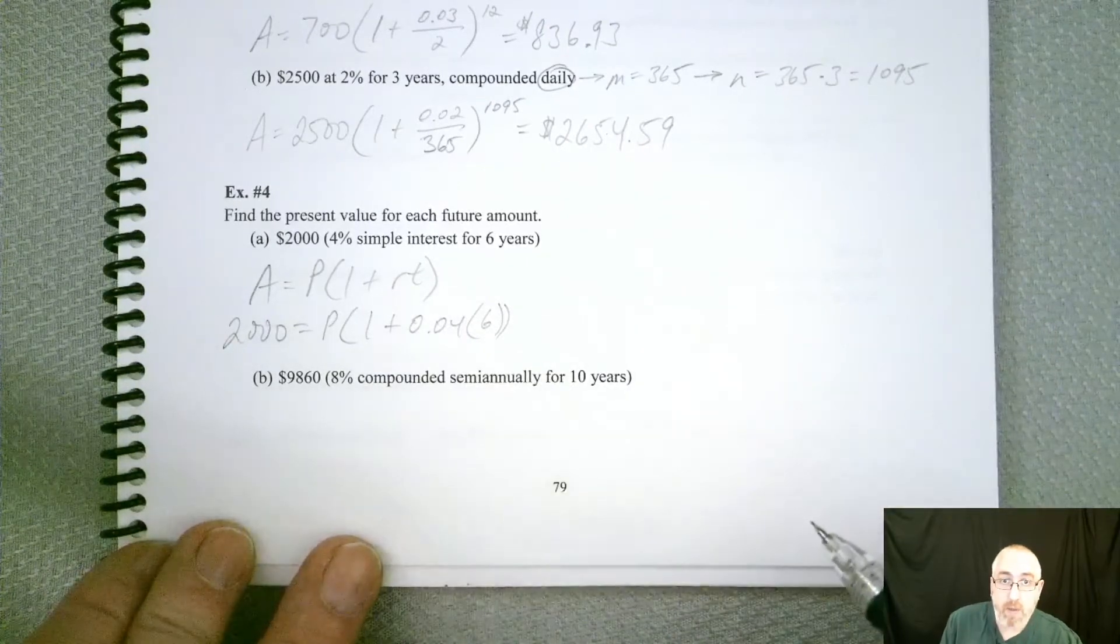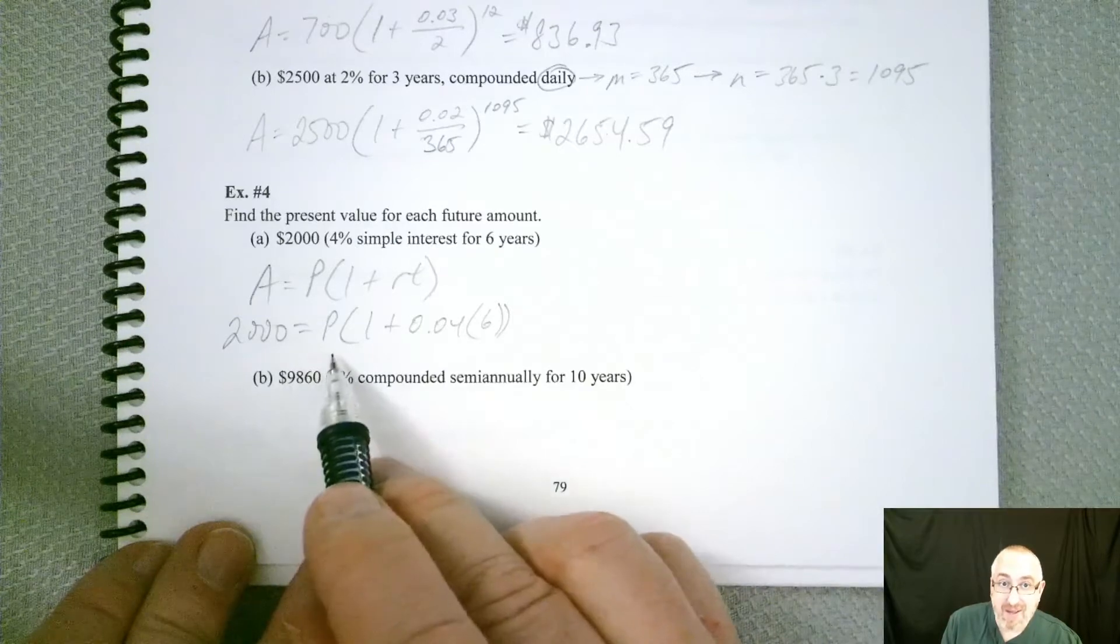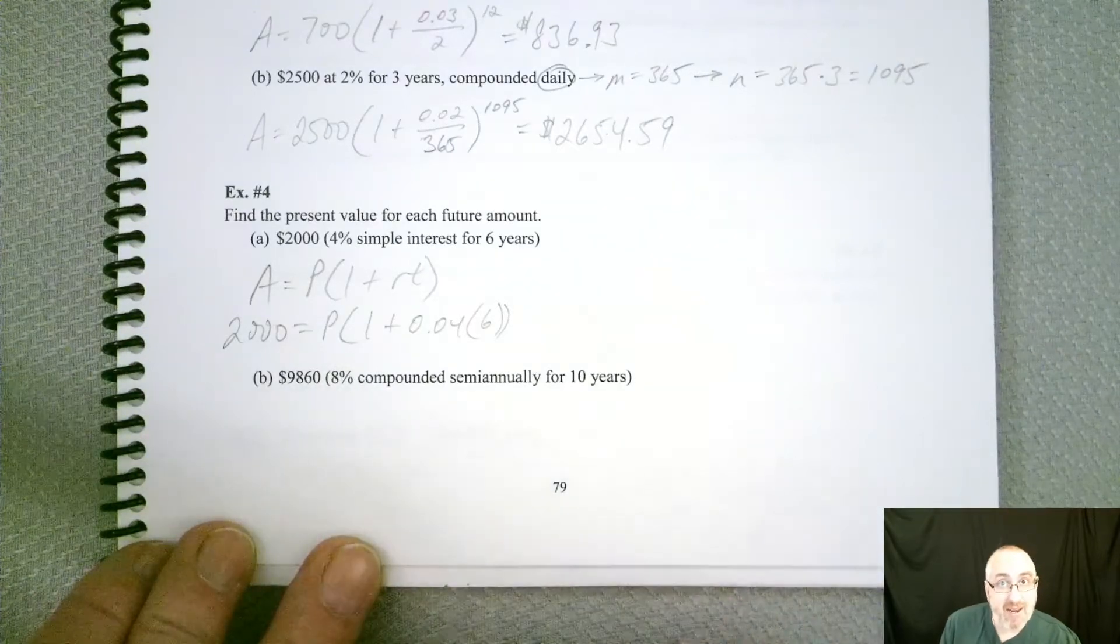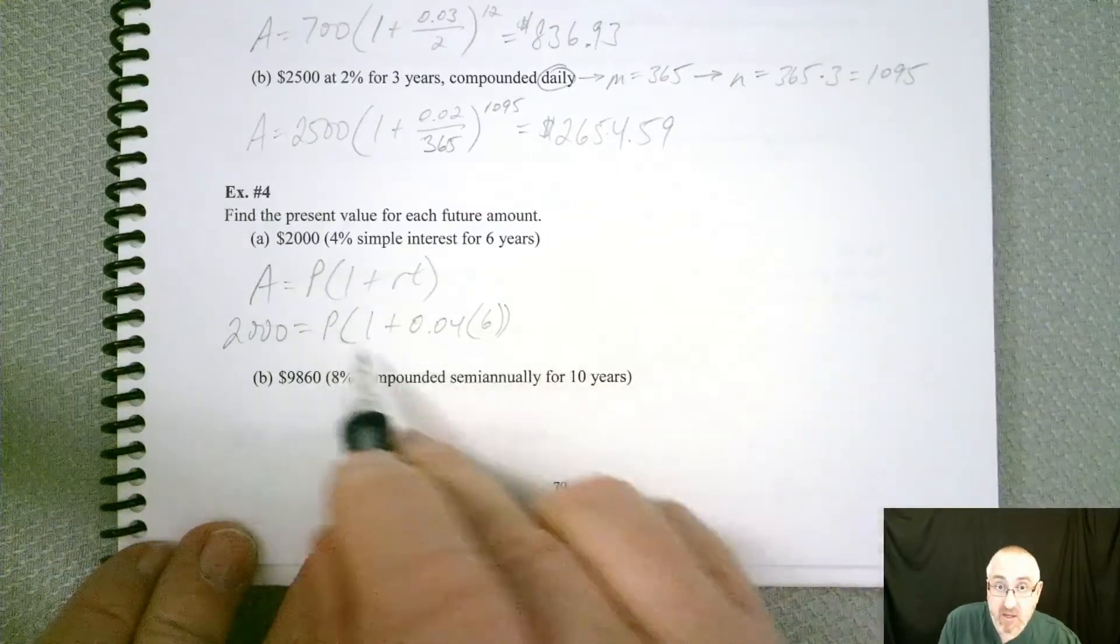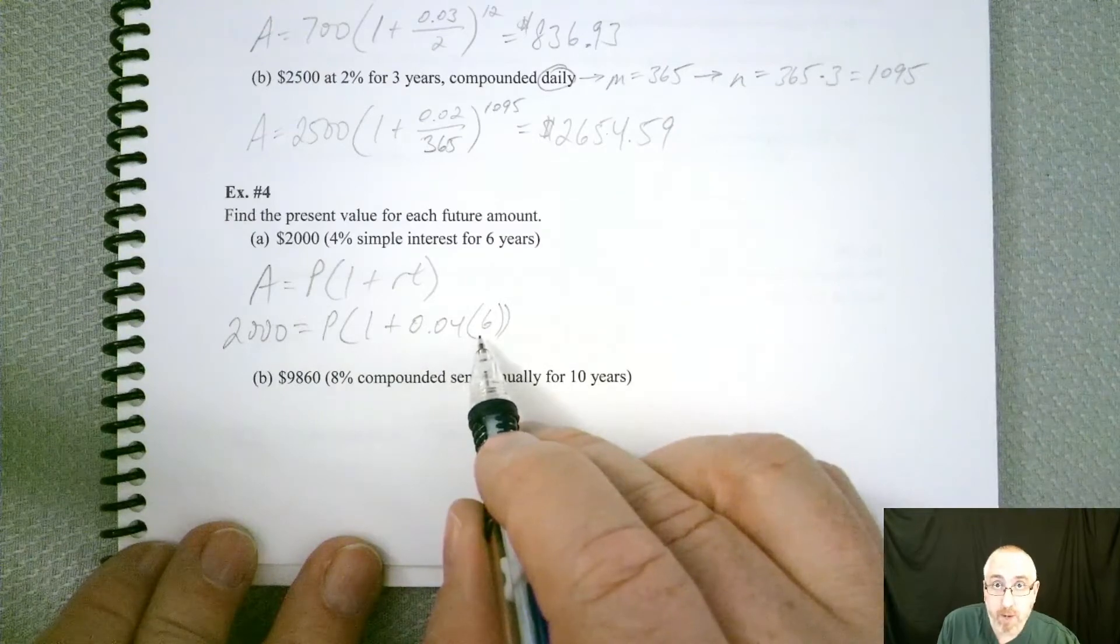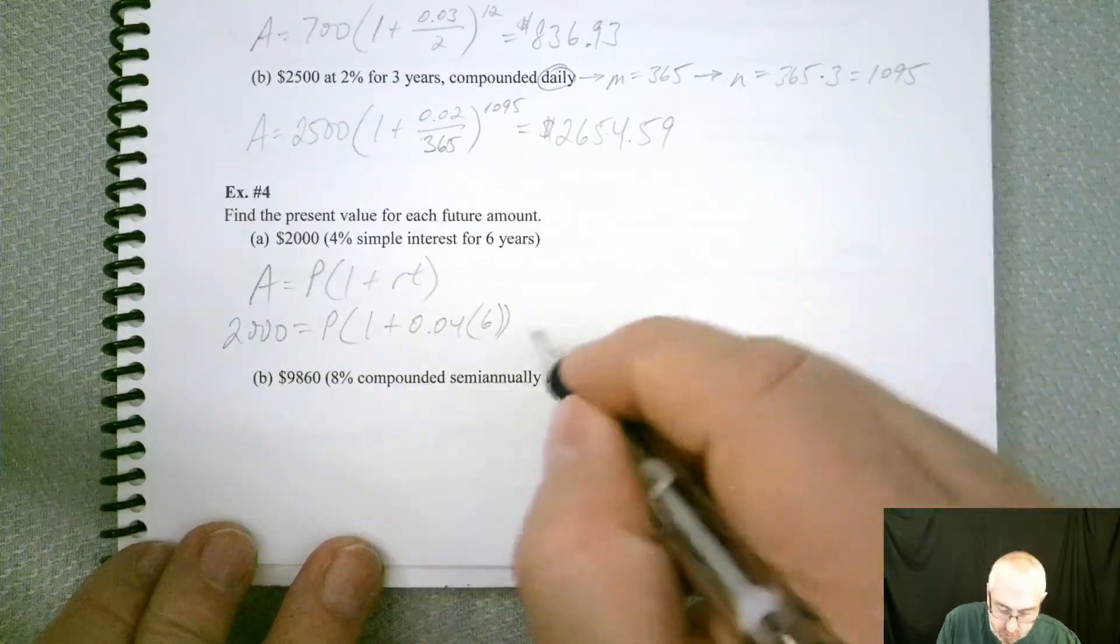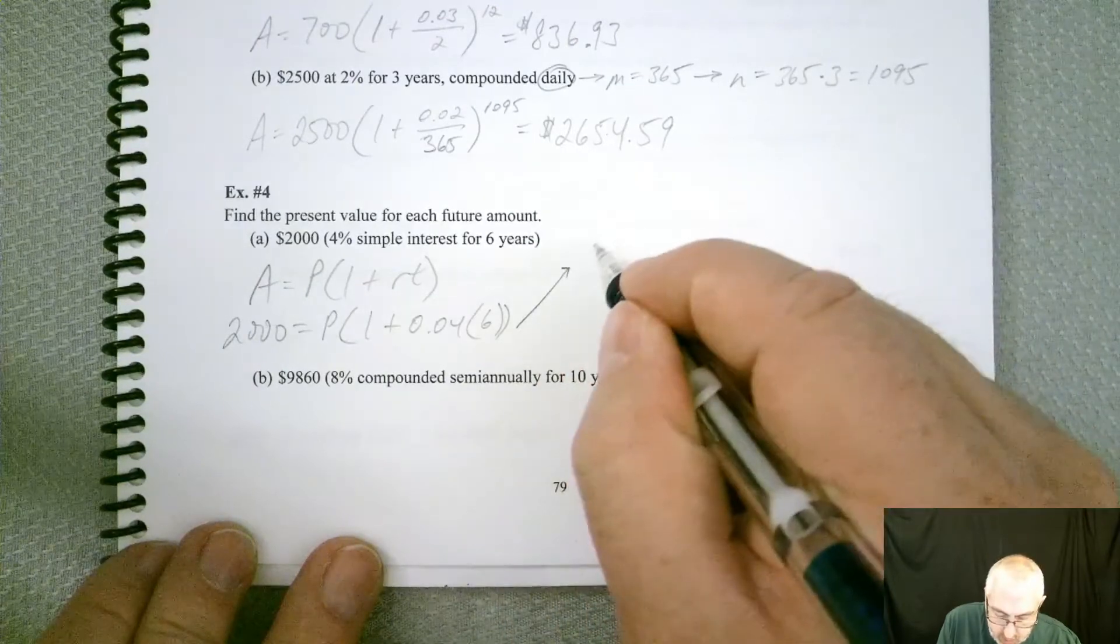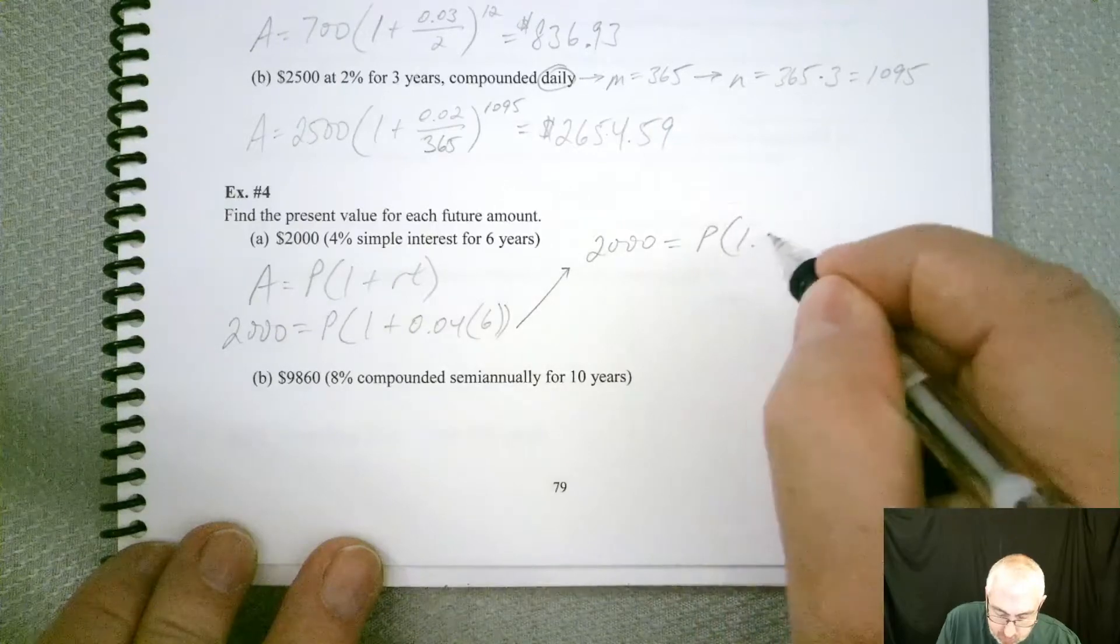So we can write this equation and we're missing P. So we just need to do what next? Well, we better simplify this stuff in parentheses first. So if we multiply that, that's going to give us 0.24. If we add one, that's going to give us 1.24. So our equation boils down to 2,000 equals P times 1.24.